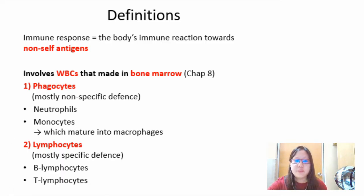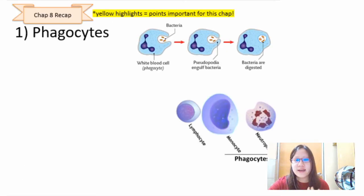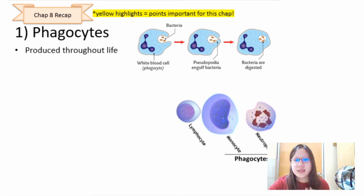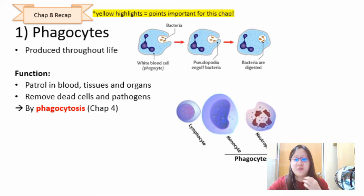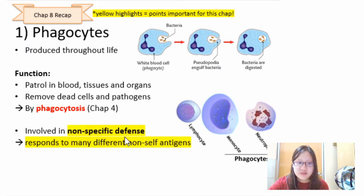Let's recap phagocytes, as this overlaps with Chapter 8 and is very important. Phagocytes are produced throughout life and their function is to patrol tissues, blood, and organs, removing dead cells and pathogens. They are called phagocytes because they undergo phagocytosis. They are involved in non-specific defense and can respond to many different non-self antigens — not just one.